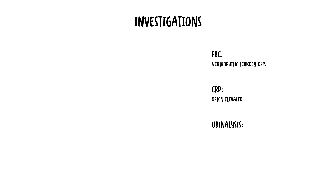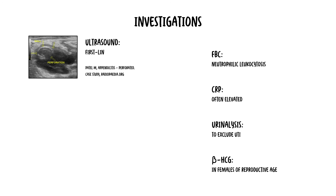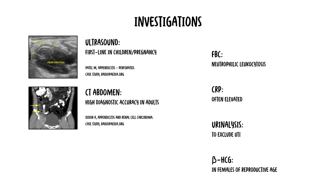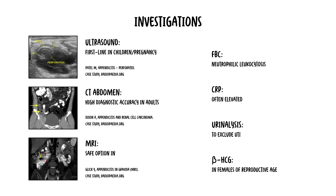Investigations typically show an elevated neutrophil count (neutrophilia) and elevated CRP due to the inflammatory process. Urinalysis and beta-hCG are important to rule out differentials such as UTI or pregnancy. For imaging, ultrasound is first-line in children and pregnancy, CT abdomen has high diagnostic accuracy, and MRI is an option in pregnancy when CT is contraindicated or the diagnosis is uncertain.